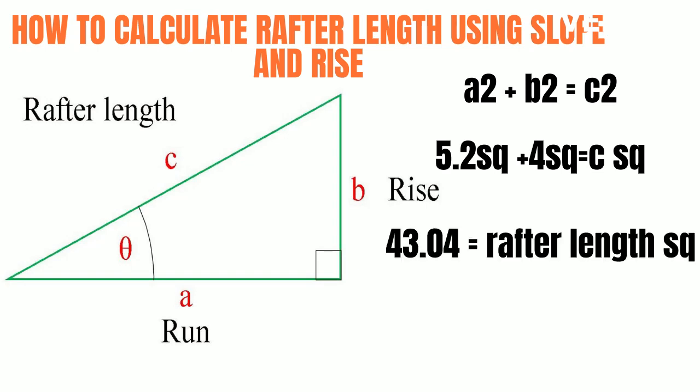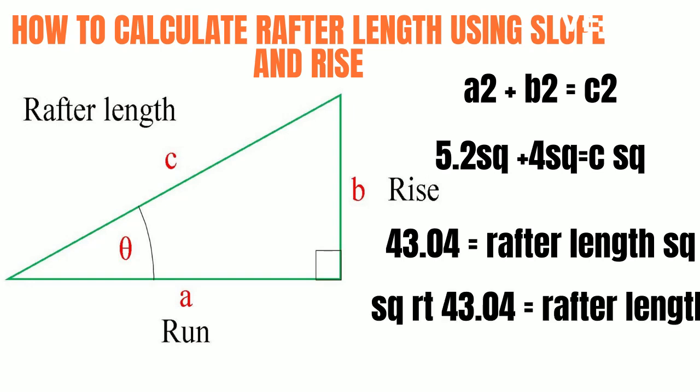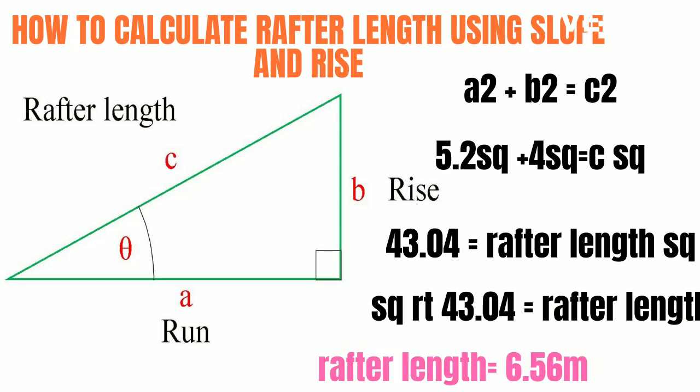Tabulating that, we get 43.04 equals rafter length squared. Now we find the square root of 43.04, which gives the rafter length. Therefore the rafter length is 6.56 meters.